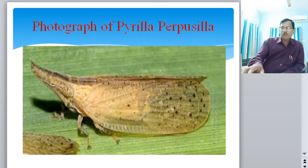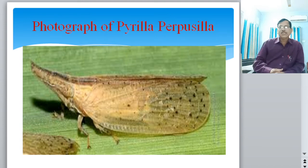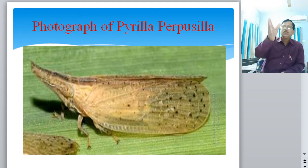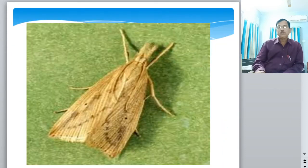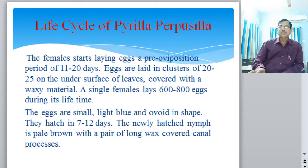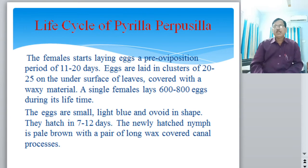Photographs of Pyrilla purpurcilla show it is adapted to damaging sugarcane. It has lip-like structures, hence it is called the sugarcane leaf hopper. The body includes head, thorax, abdomen, and wings that act like lip-like structures with different veins and sub-veins in the wing venation. This is the sugarcane leaf hopper photograph.